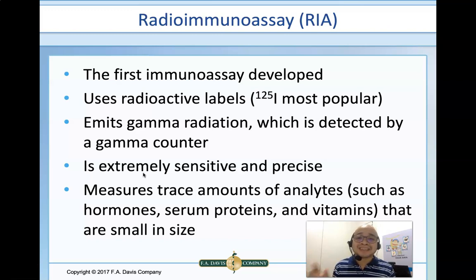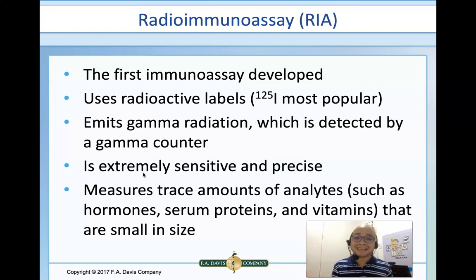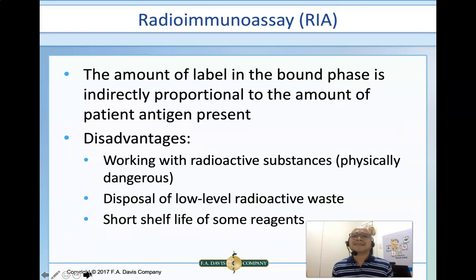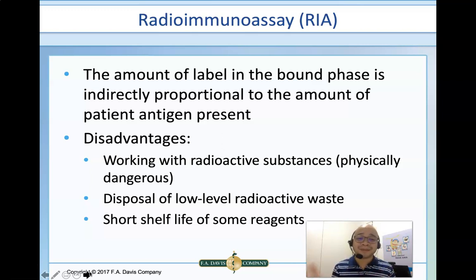Radioimmunoassay is extremely sensitive — even the smallest, most minute amount can be detected. It is also precise, meaning it can measure trace amounts of analytes such as hormones, serum proteins, and vitamins, which occur in very small concentrations. In RIA, the amount of label in the bound phase is indirectly proportional to the amount of patient antigens — this is exactly the principle of competitive immunoassay.